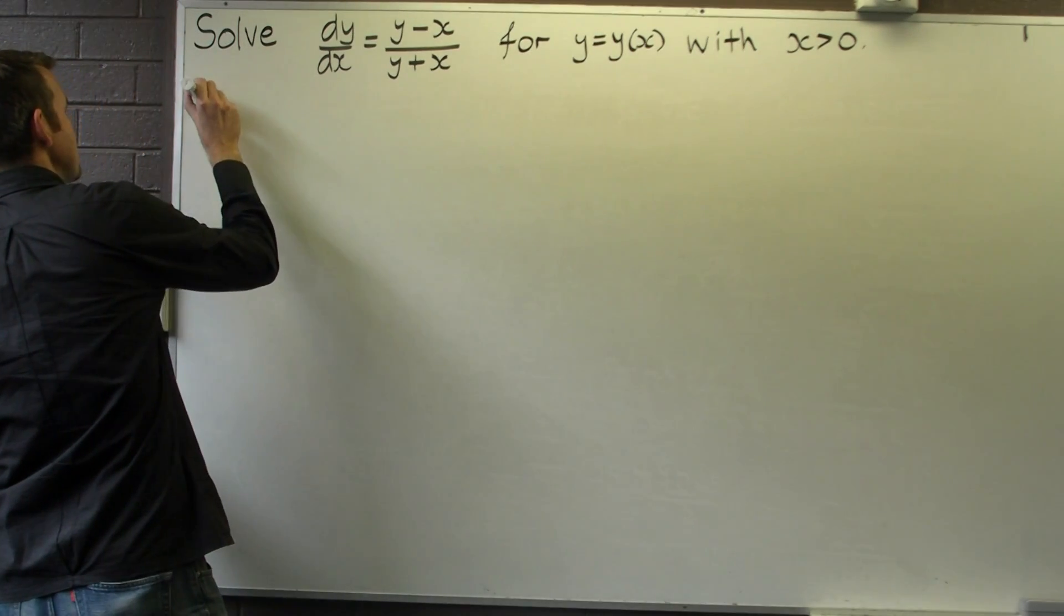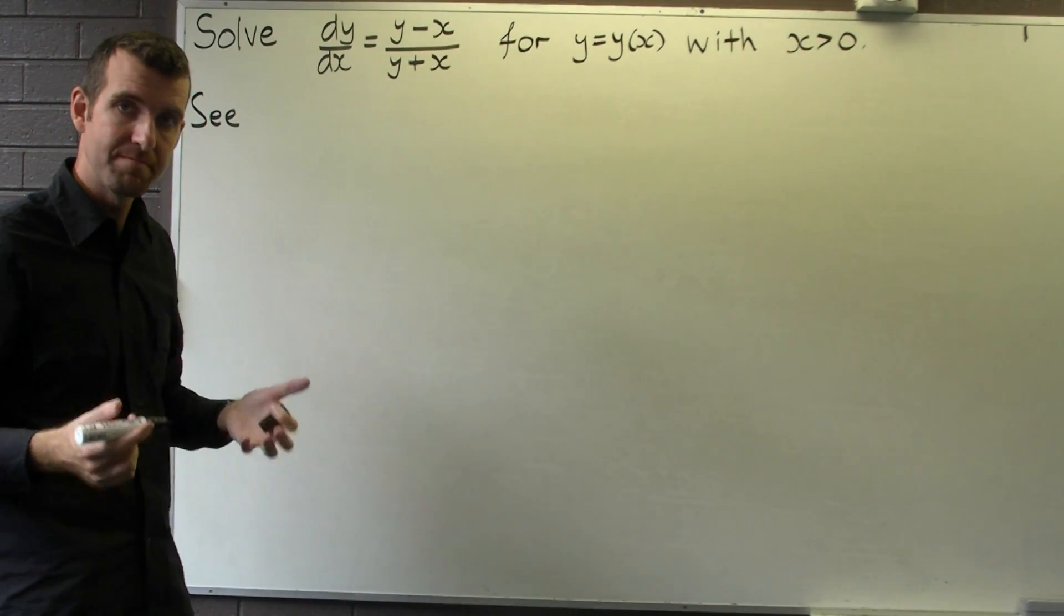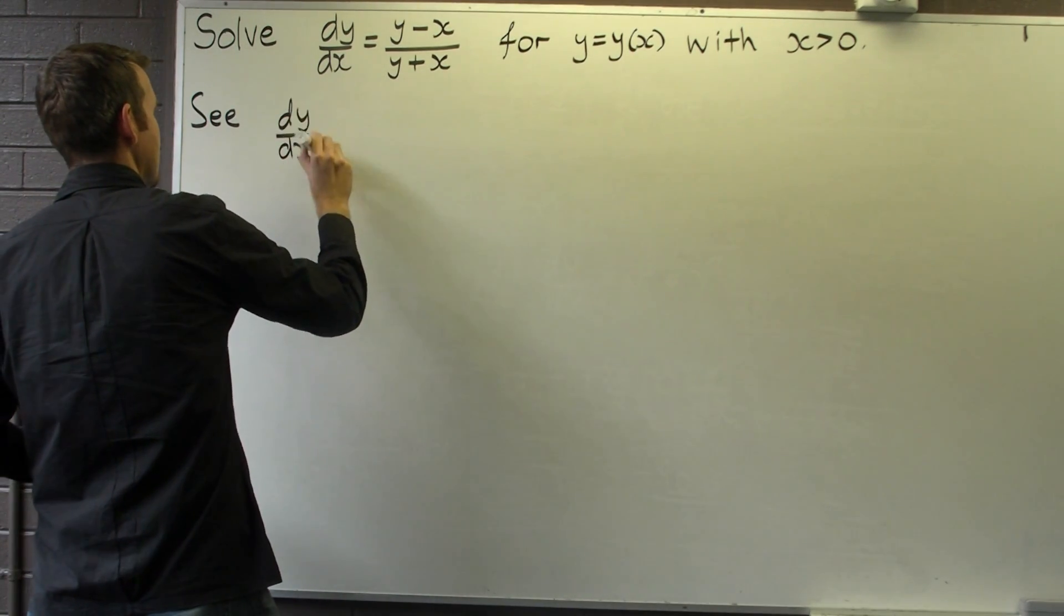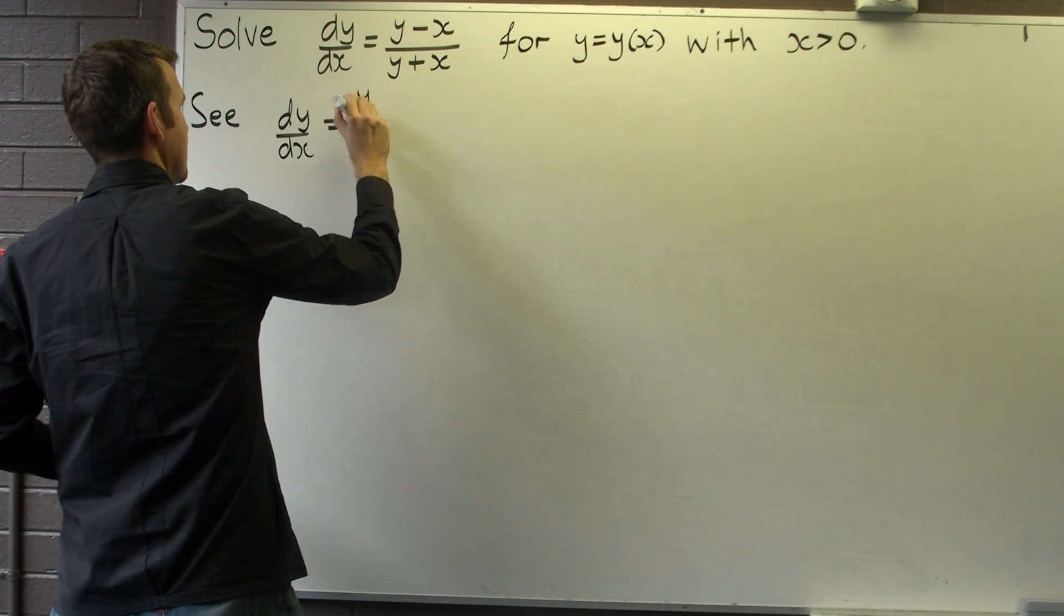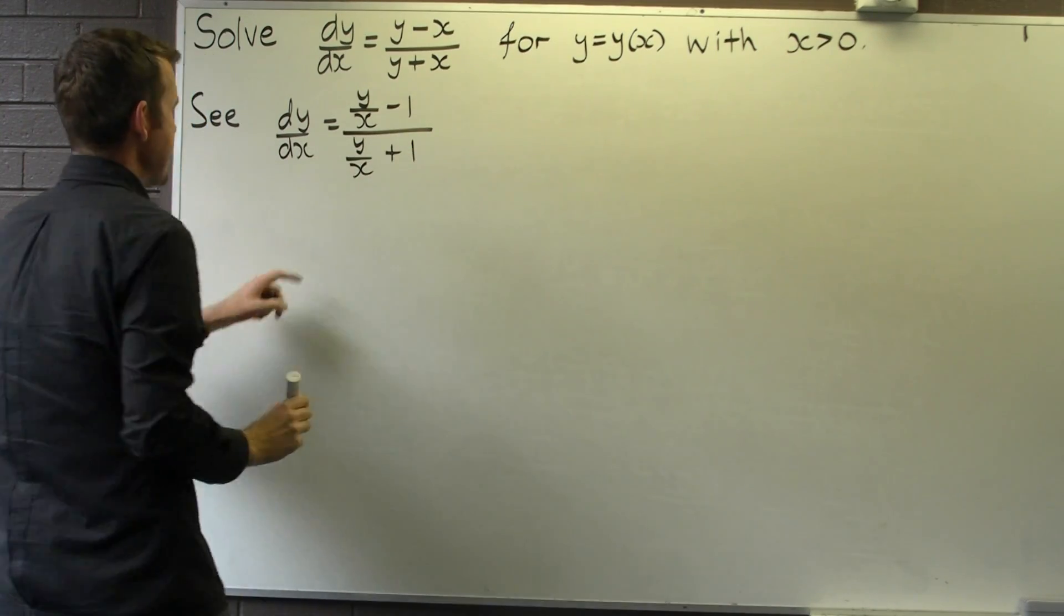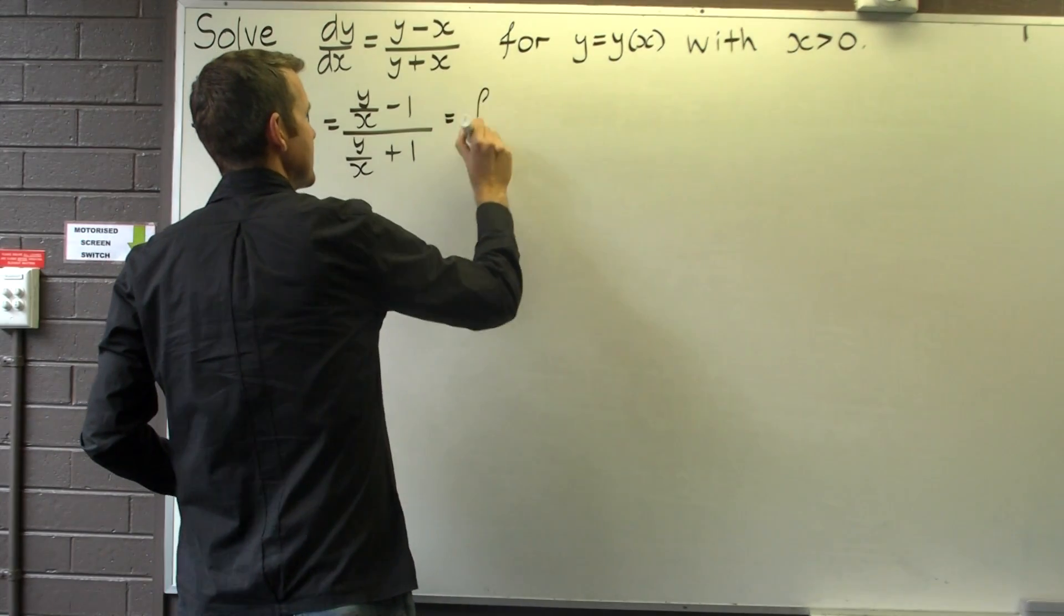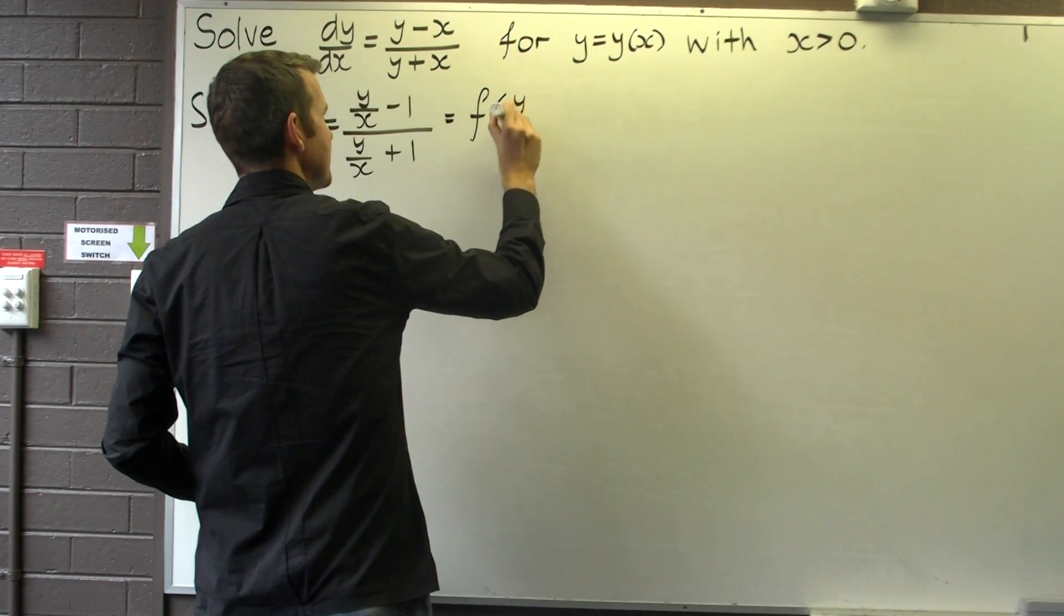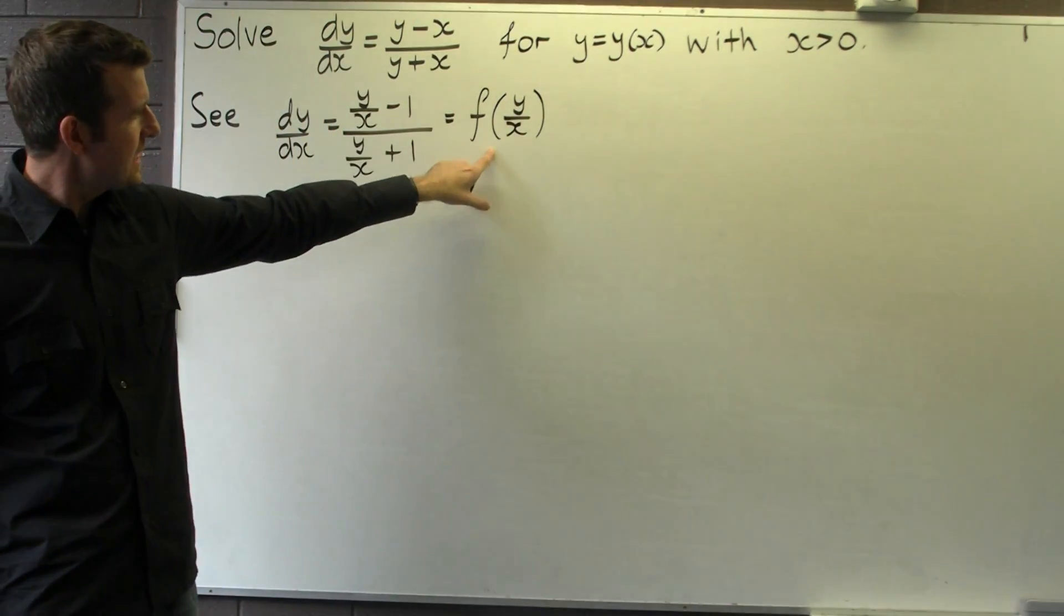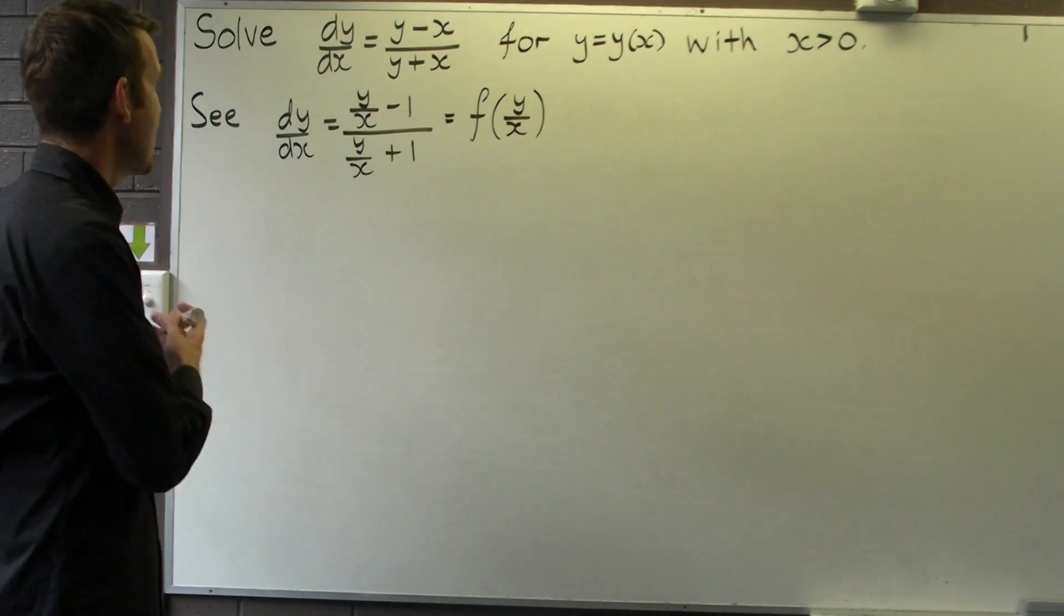So how do we determine that? Well, what I'm going to do is divide the right-hand side, top and bottom, by x. You now see that the right-hand side is in the following form. It's a function of y on x. When this characteristic is satisfied, we call the ODE homogeneous.